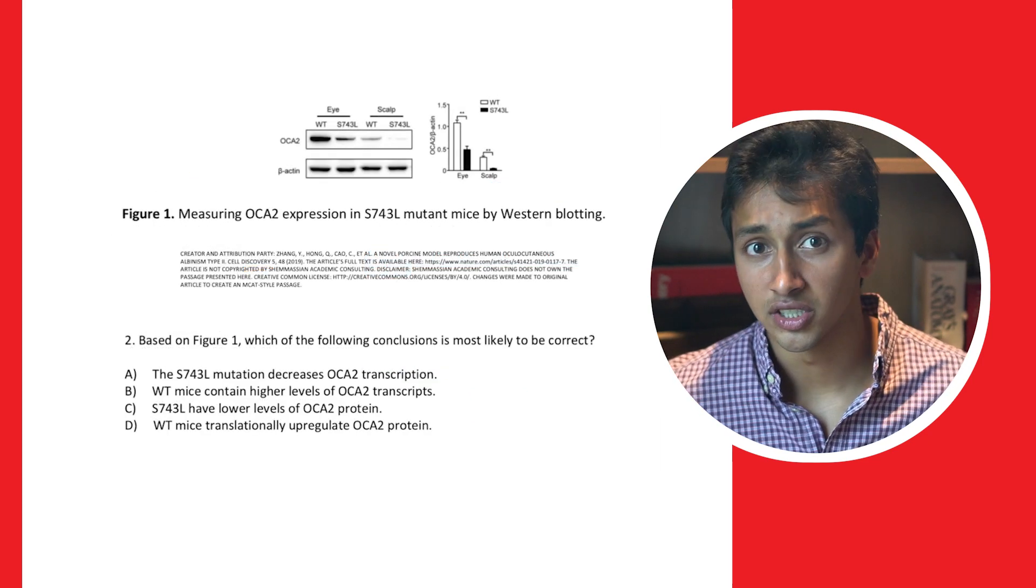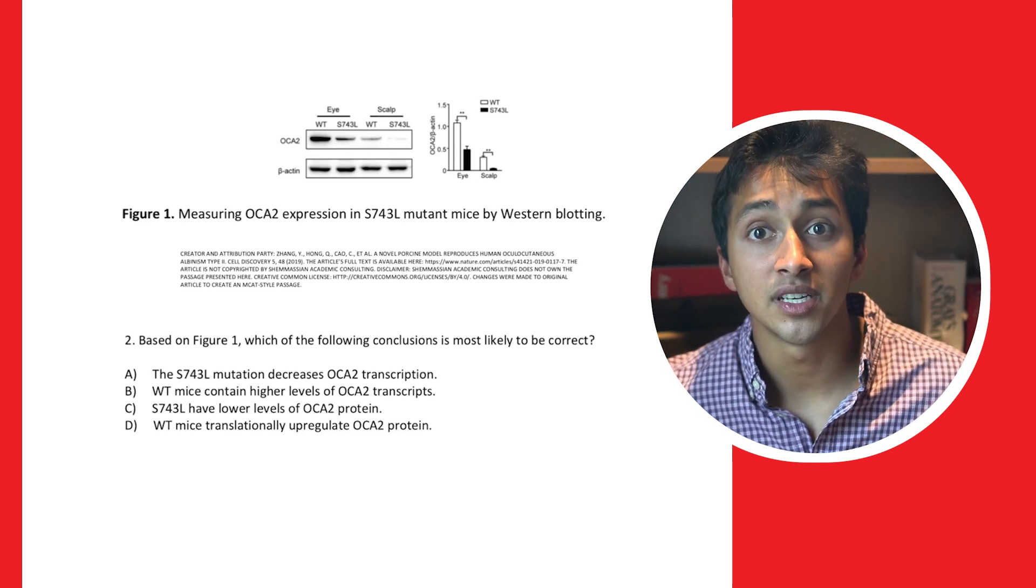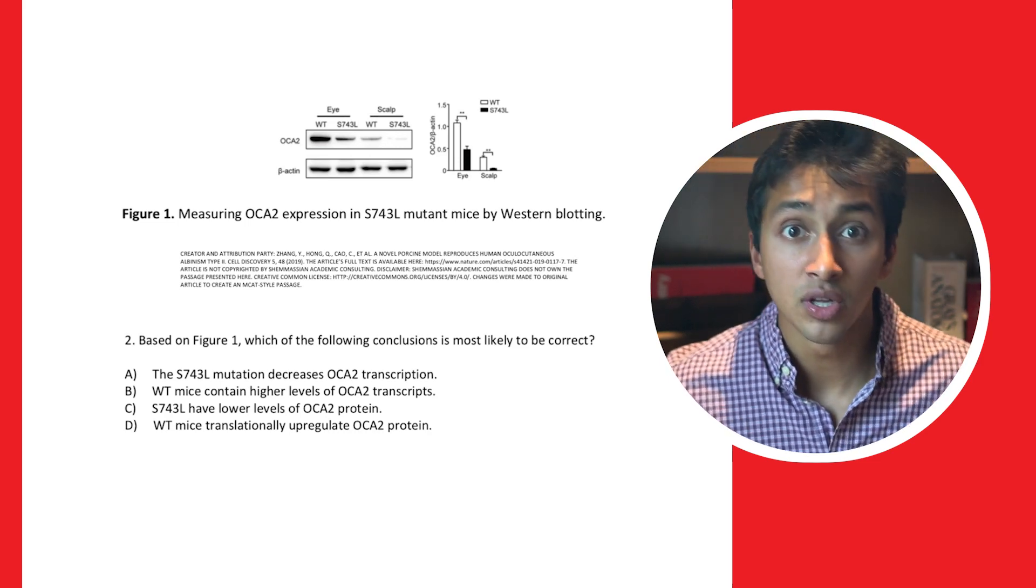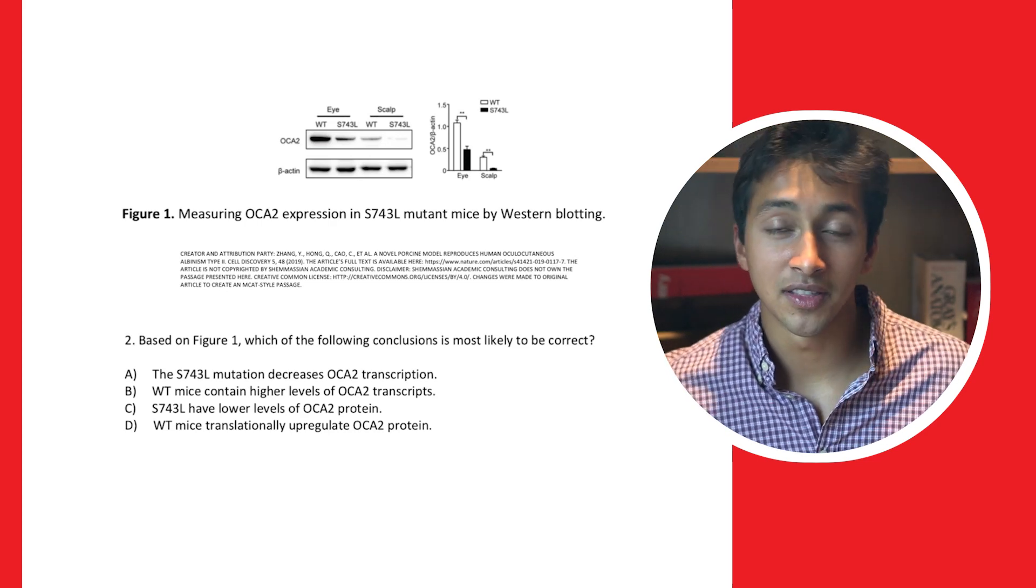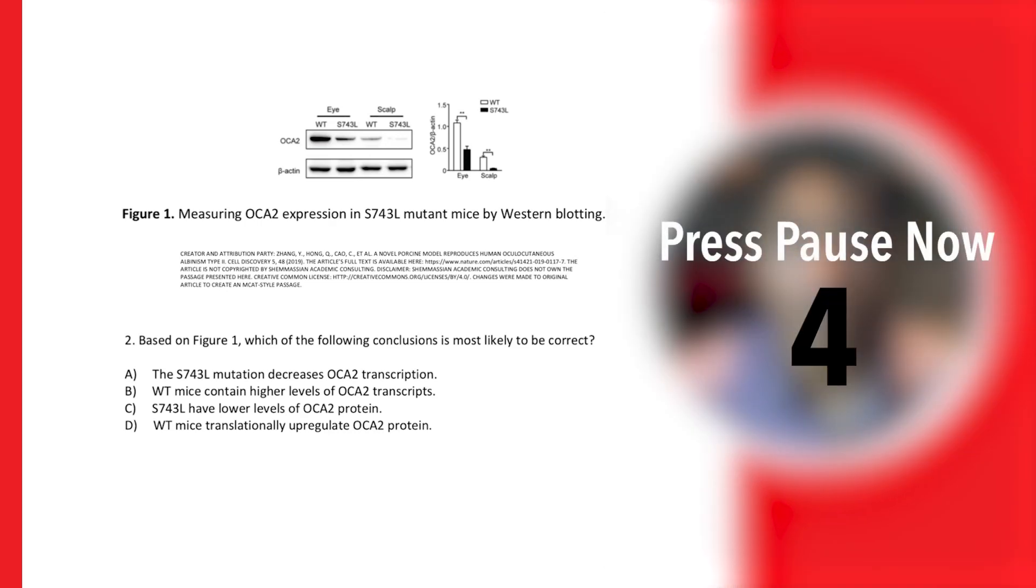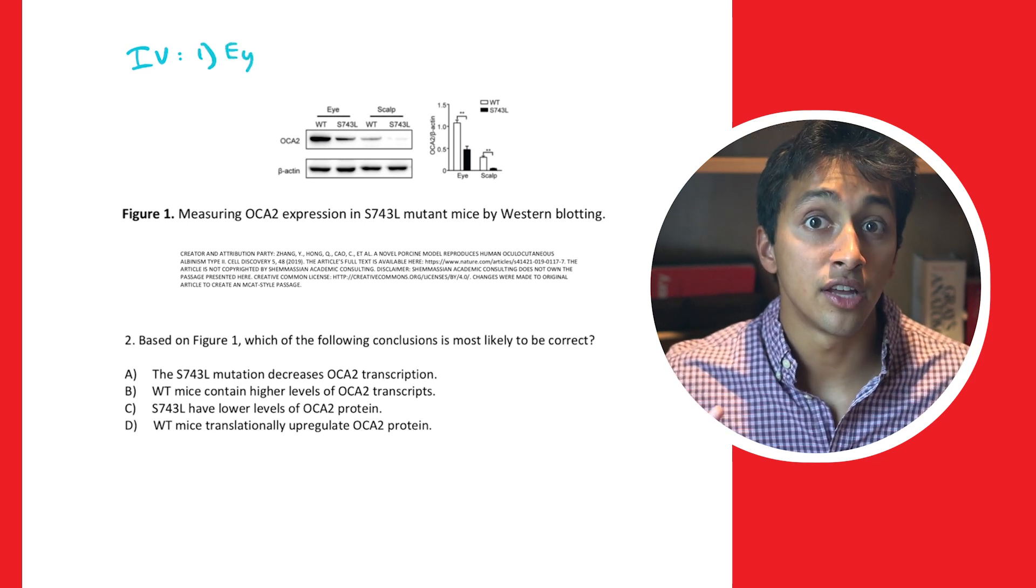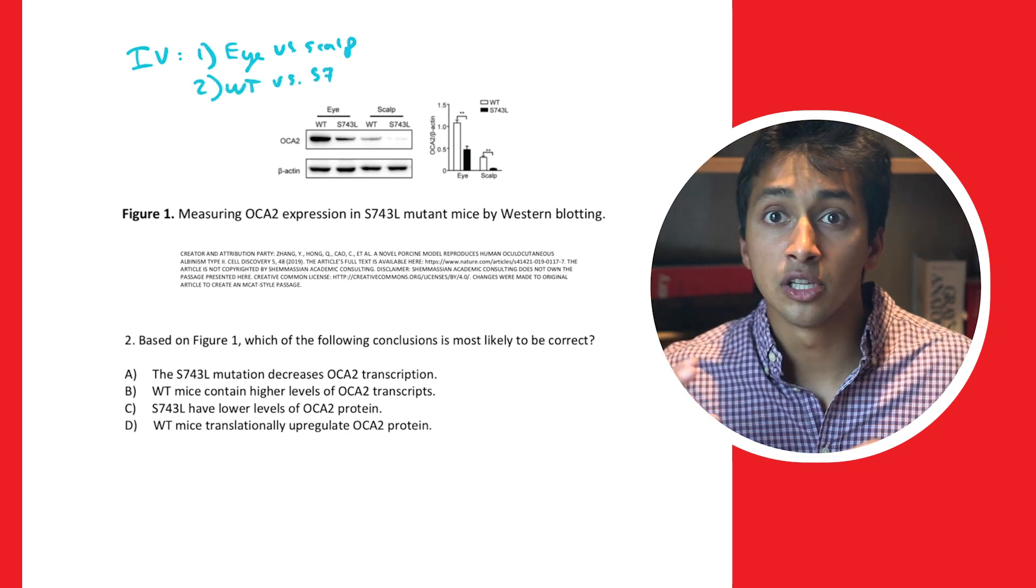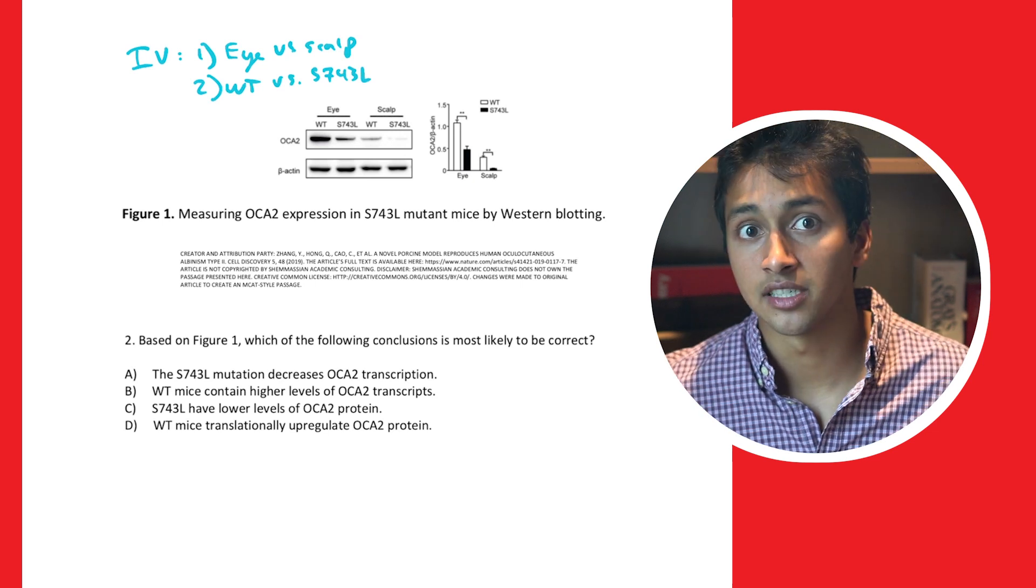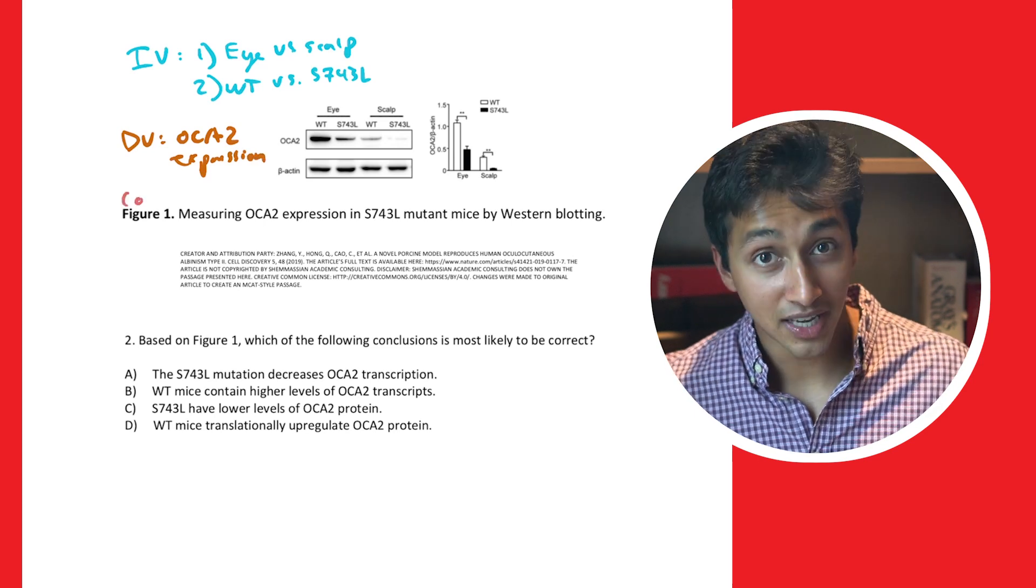Let's look at another Western blot and question. Now, before we look at a question, I'd like you to work on a quick exercise. Go ahead and take a moment to make a list of the independent variables, the dependent variable, and any controls you see in this Western blot now that we've done it a couple times. Once you're done, unpause this video, and let's check your answers. So, it looks like there are two independent variables. One, the sample is either from the eye or the scalp, and two, the sample is wild type or contains a serine to leucine mutation at the 743 amino acid position. The dependent variable is protein expression of ACA2, and the control is, once again, beta actin.